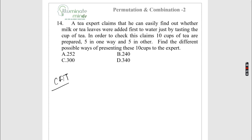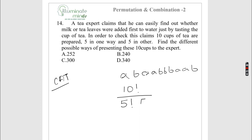A tea expert claims to tell whether milk or tea leaves were added first. 10 cups were prepared — 5 one way (call them A) and 5 the other way (call them P). The number of ways to present these 10 cups is 10!/(5!×5!) = 252.